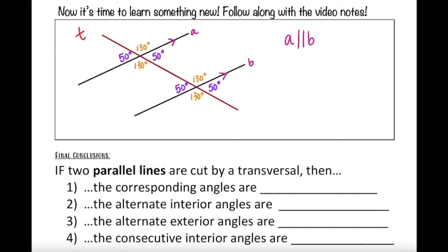What do we notice about the corresponding angles? Corresponding means being in the same location at both intersections. So the 50-degree angle at the top corresponds to the 50-degree angle at the bottom, and the 130-degree angle at the top corresponds to the 130-degree angle at the bottom. All four pairs of corresponding angles are congruent — they have equal measures.